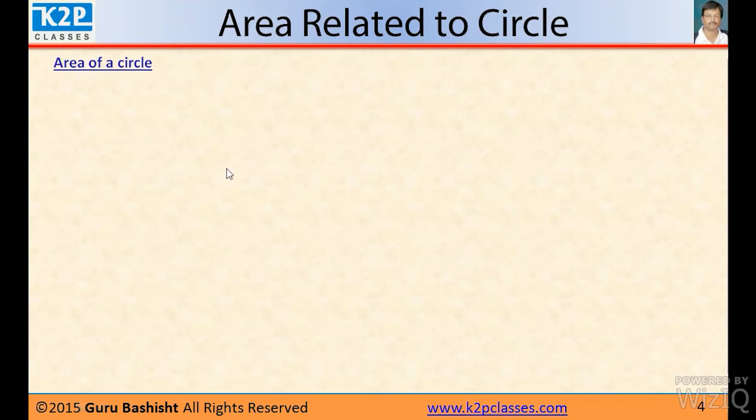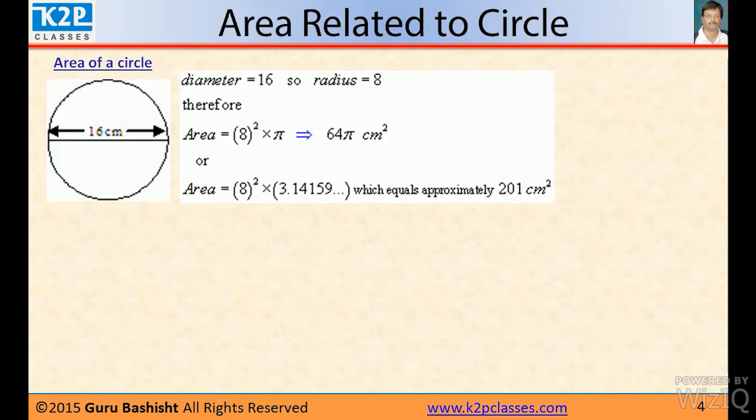Now let us solve some problems. There is a circle whose diameter is 16 cm. So diameter is 16, so radius is 8. Therefore, area = πr², that is π × 8², which is 64π cm². Or 64 × 3.14159 approximately gives 201 cm².